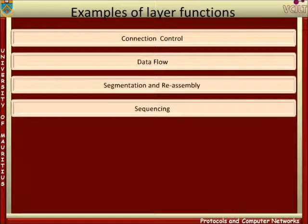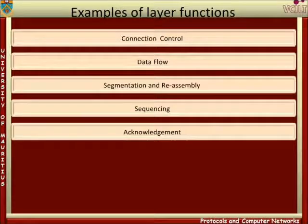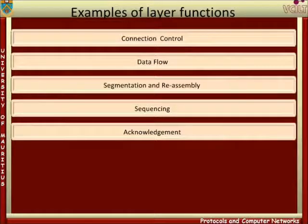Sequencing: if the higher layer requires its data to be received in the order sent, and the lower layer does not provide a service with this feature, the upper layer must preserve the order by performing some additional processing. Acknowledgement: this is where a layer must take additional actions if its lower layer does not provide a sufficiently reliable means of transferring protocol data units. Typically, this involves including identifiers in the protocol control information, and the receiving system explicitly acknowledging receipt of the protocol data units.